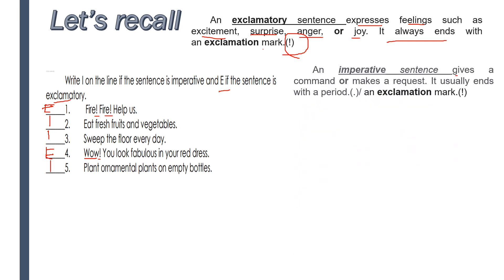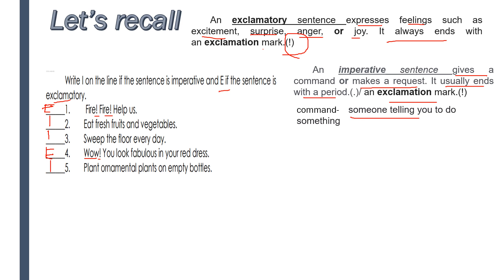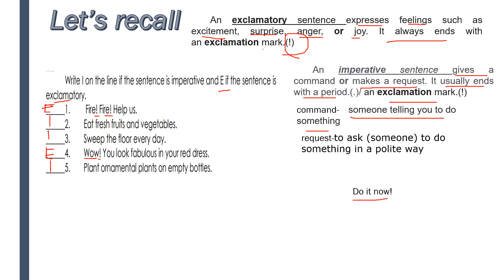What is an imperative sentence? It gives a command or makes a request. It usually ends with a period or an exclamation mark. What is a command? Someone telling you to do something — like 'Do it now.' You are telling someone to do something; it's a command. A request is asking someone to do something in a polite way, using 'please.' For example: 'Please speak quietly.' That means not too loud.